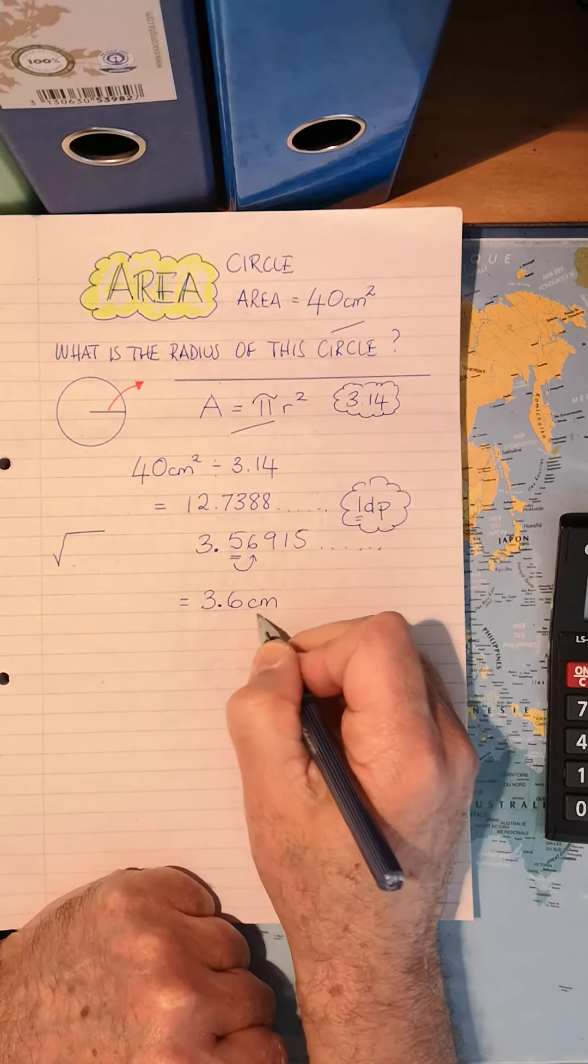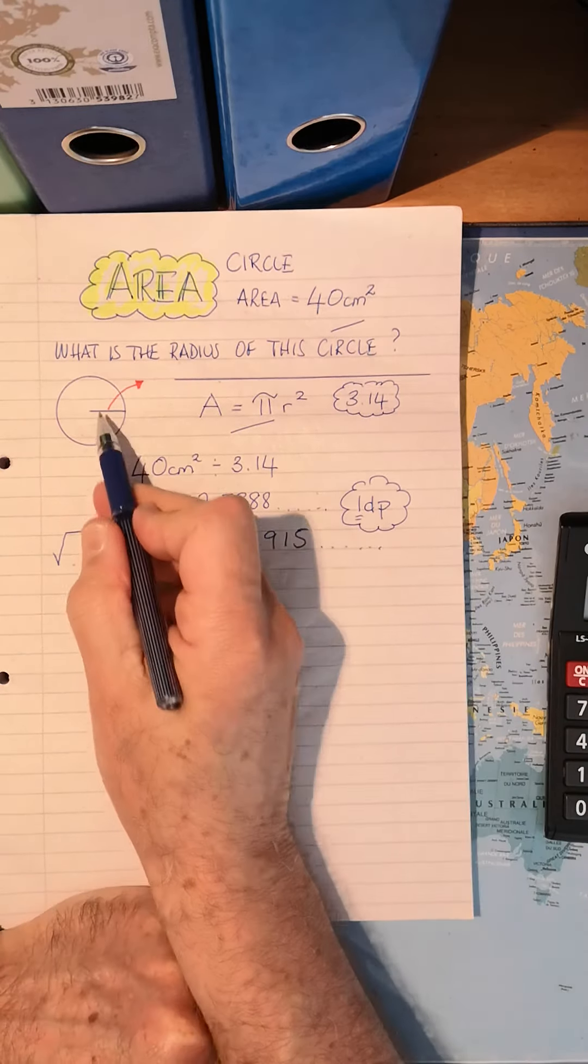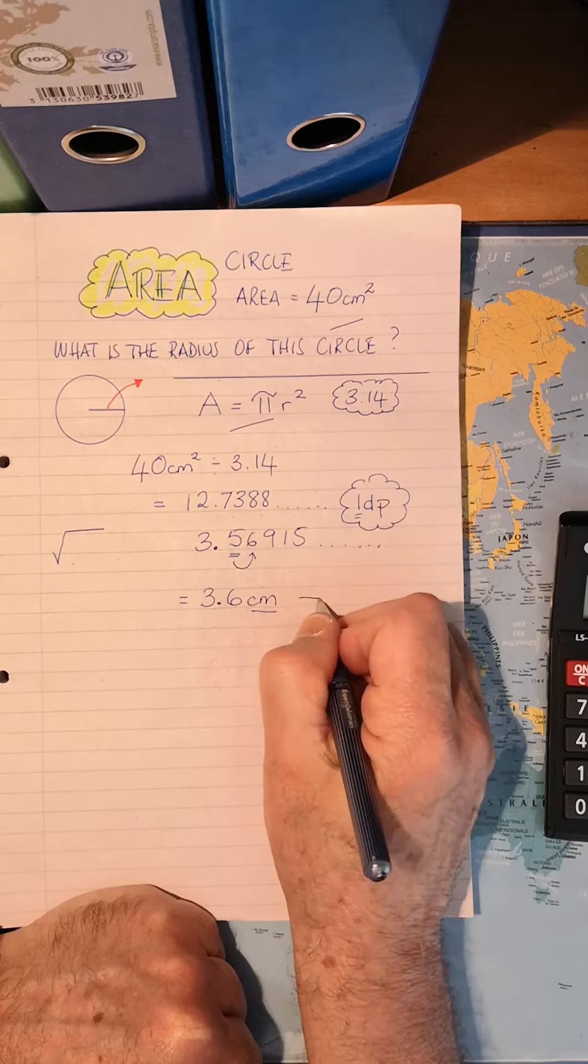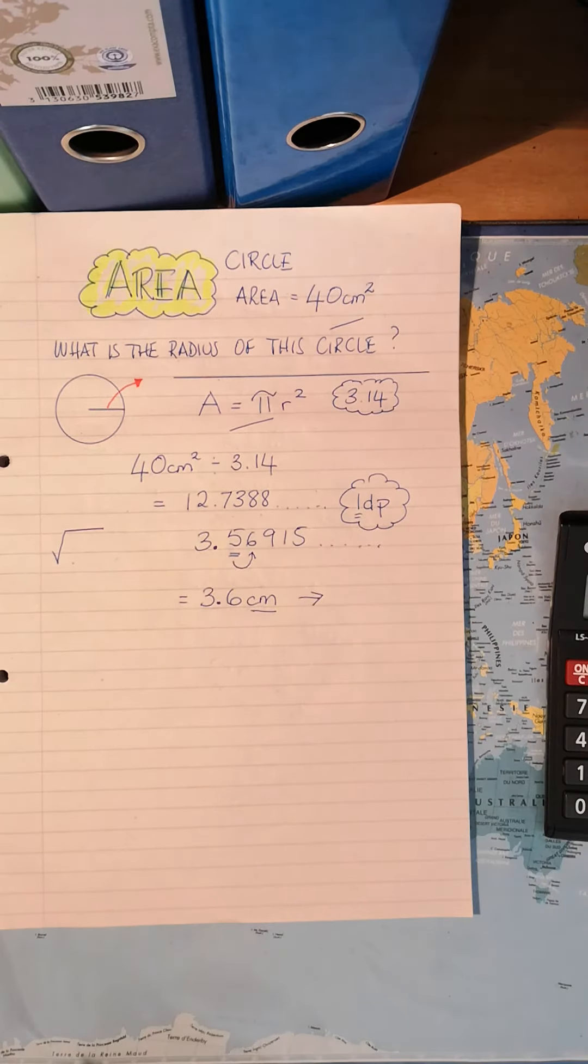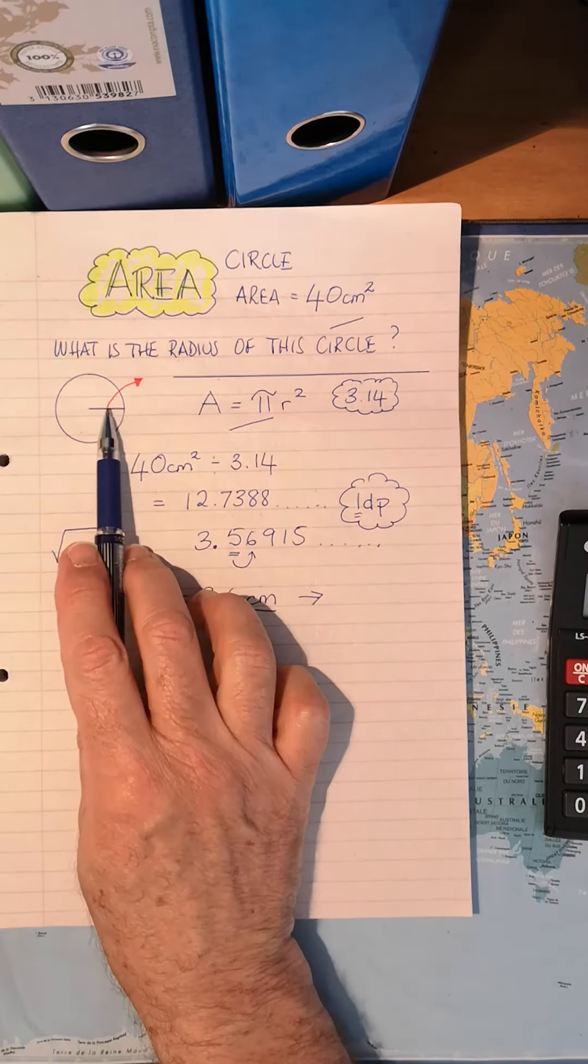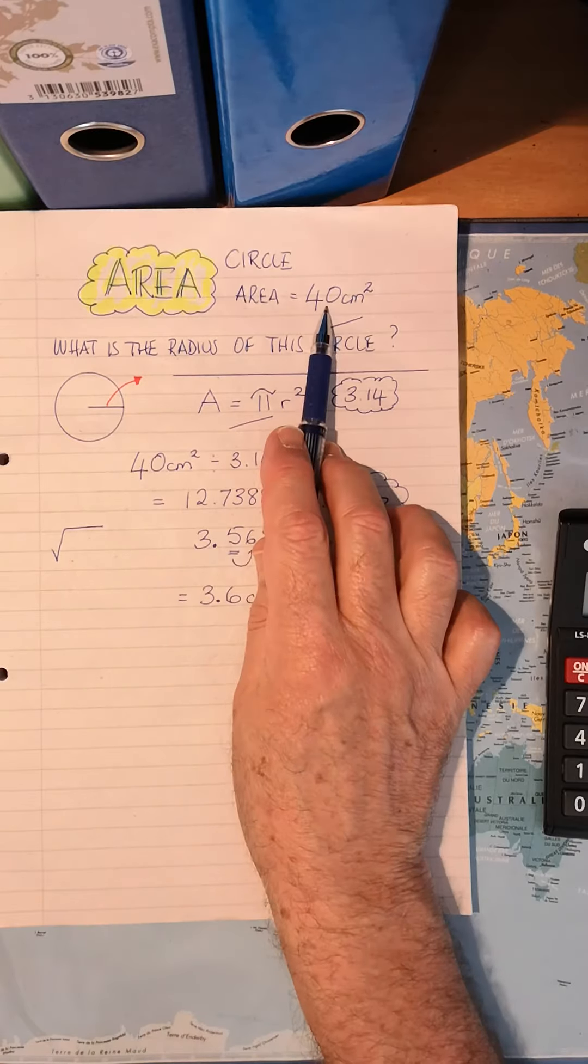Centimeters, not squared, just centimeters, because it is a distance. So there's my final answer for working out the radius when they've given us the area.